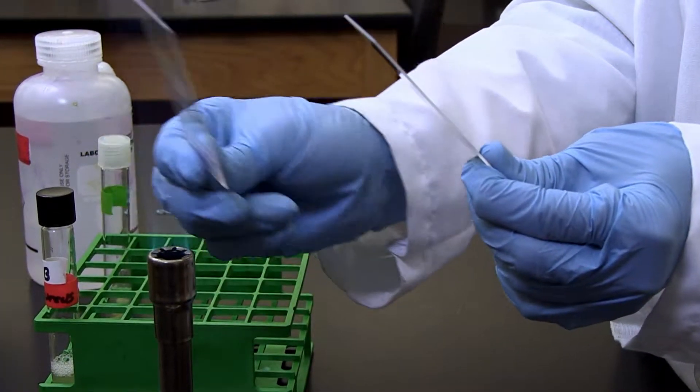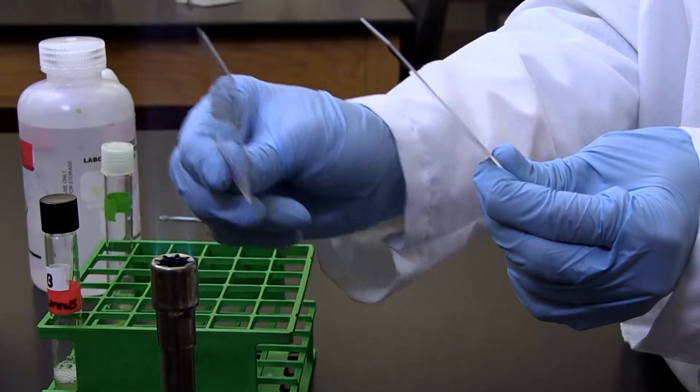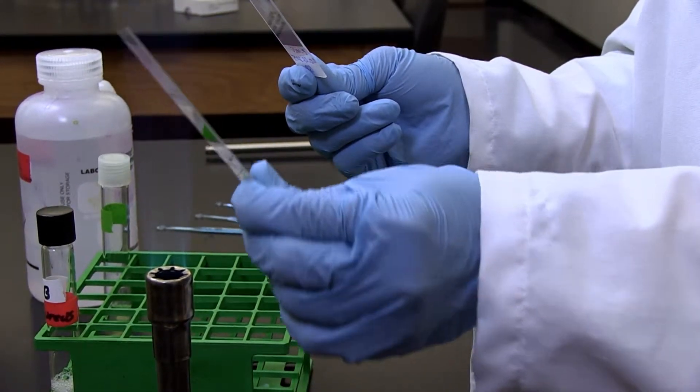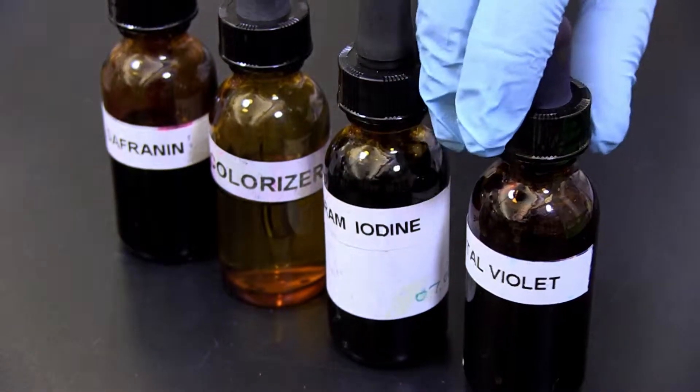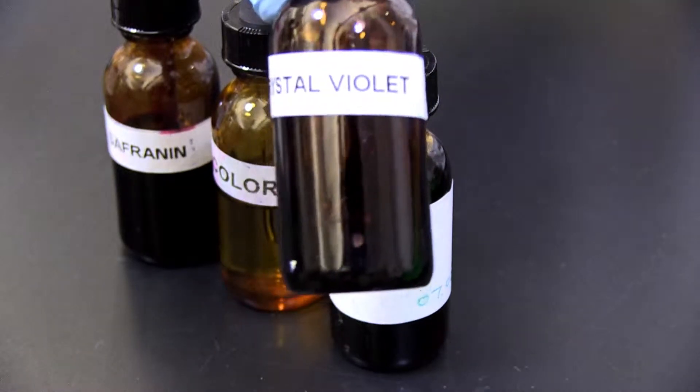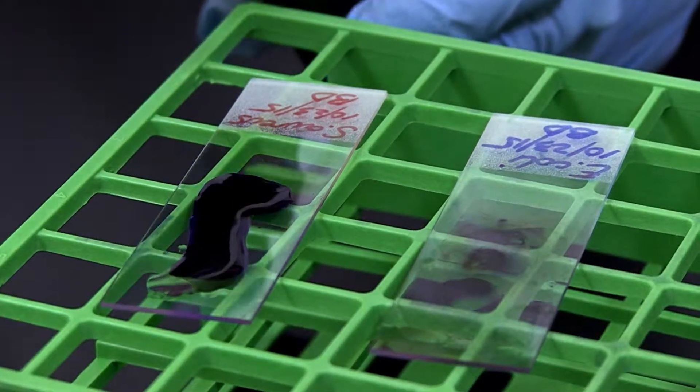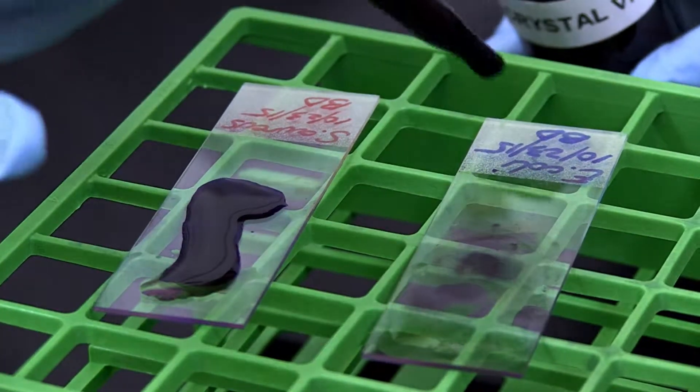To prepare a Gram stain: One, obtain two heat-fixed bacterial smears of S. aureus and E. coli. Two, cover the smears with primary stain, crystal violet, for 30 seconds. If viewed under a microscope, both slides should be colored a deep purple.